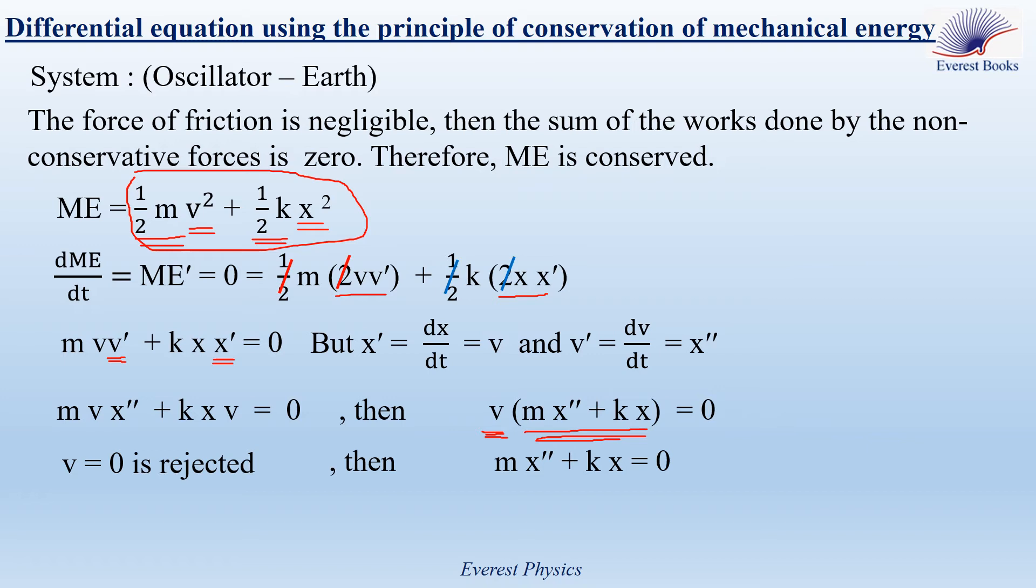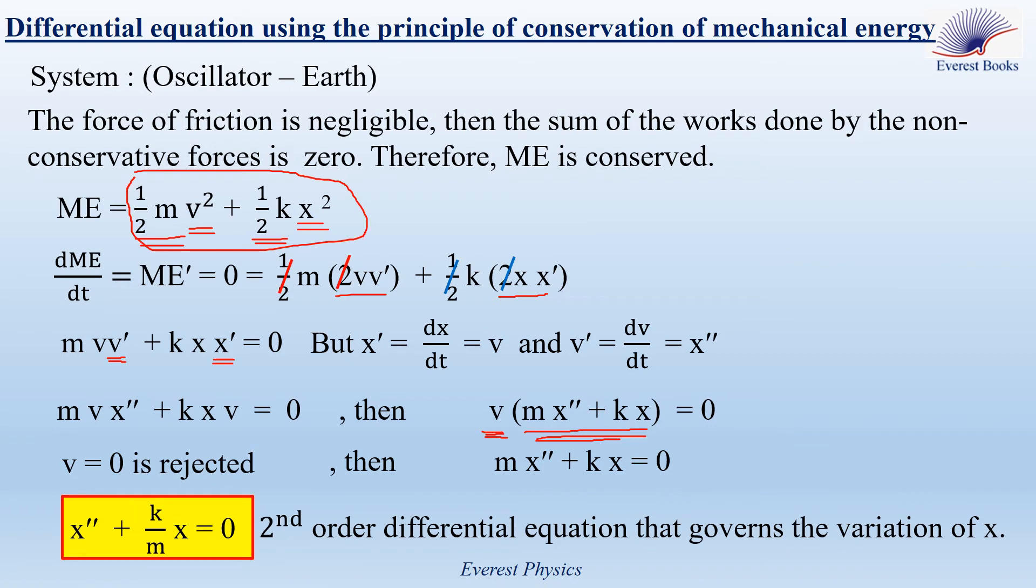M x double prime plus K x is equal to zero. Divide the equation by M. This is going to be x double prime plus K over M times x is equal to zero. This is the second order differential equation that governs the variation of x.